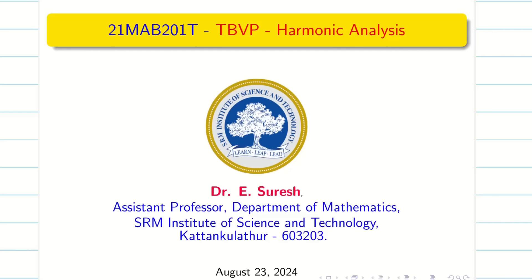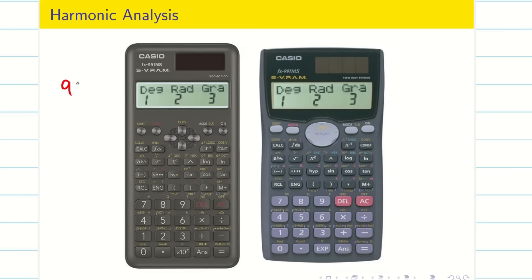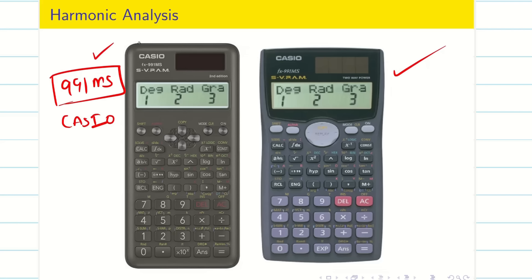Dear students, welcome to this exciting session of unit 2. We are going to see harmonic analysis — let us explore what harmonic analysis means and how to solve the problems. To do this, we need the help of a calculator. If you don't have a calculator, pause this video, take the calculator — Casio 991MS generation 1 or generation 2. I am going to solve the problems and give the shortcut technique to crack them using the calculator one by one.